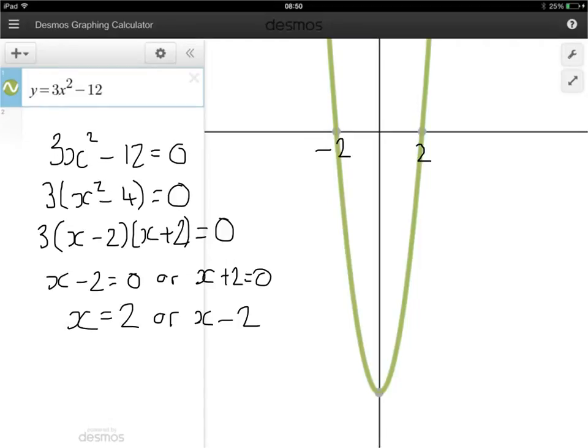Now then, to find the axis of symmetry, once we've found the roots, we think about what the distance is between the two roots. So between minus 2 and 2, there's a distance of 4. If we half that distance, half of 4 is 2, so halfway between the two roots is actually the origin, the point 0, because it's 2 in that direction and 2 in the other direction. So the axis of symmetry here is when x is 0.